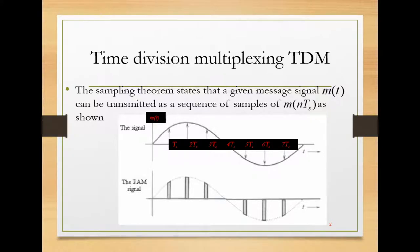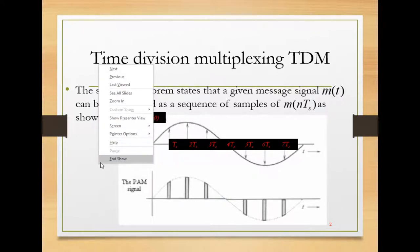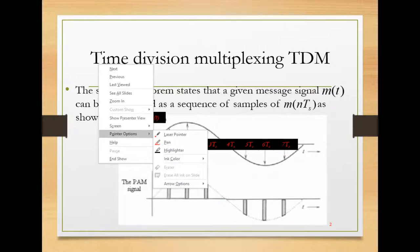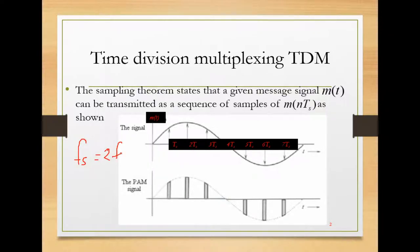The sampling theory basically states that if you have a message signal which is analog, denoted by m(t), this signal can be transmitted as a sequence of samples m(nTs). You sample this message signal at frequency Fs equal to 2Fm — double the maximum frequency component of the message signal. To reconstruct your signal without any interference, you need a sampling frequency at least equal to 2Fm, and it's preferred to be greater than 2Fm.